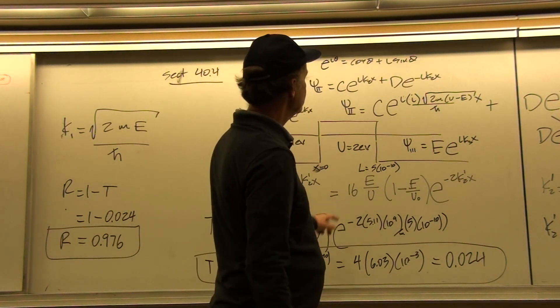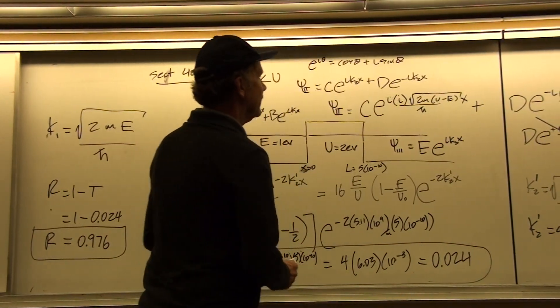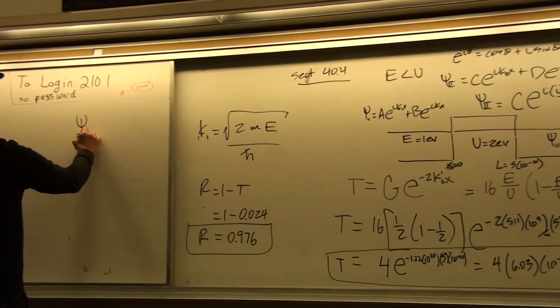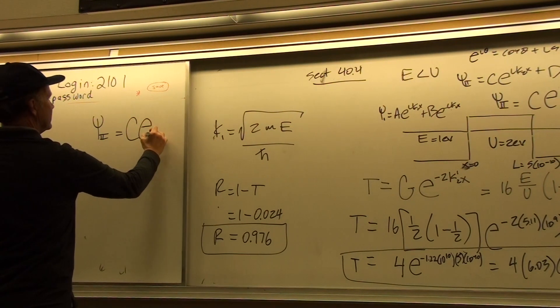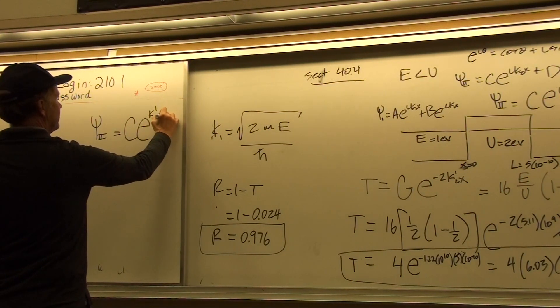Alright, so with a solution in region 2 that looks like psi 2 equals C e to the k2 prime x,